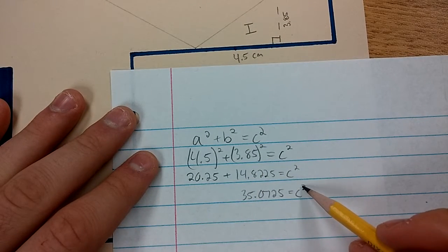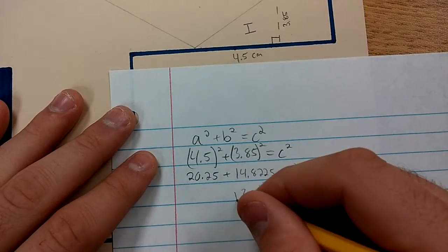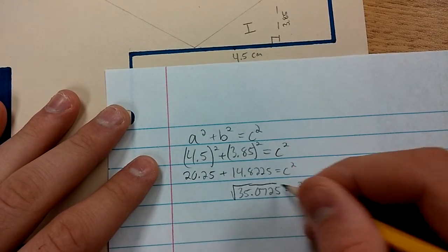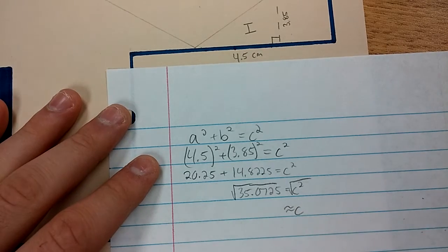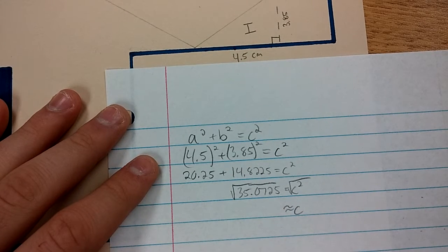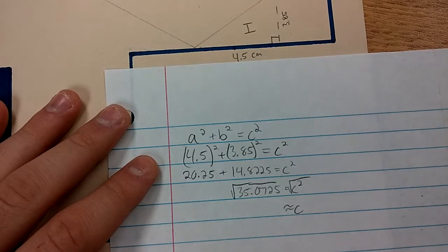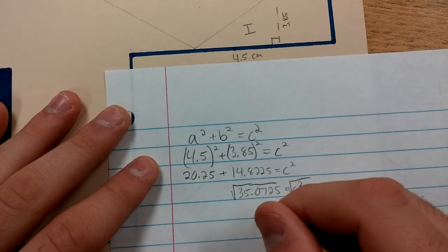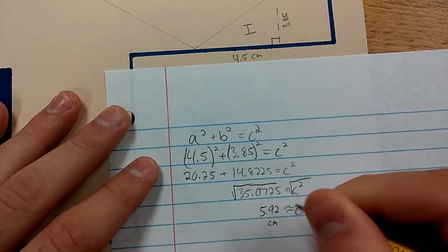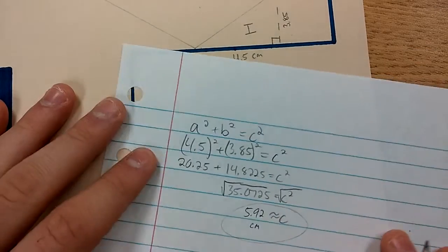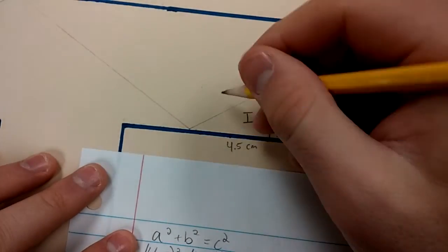In order to find just c, the inverse of squaring something is the square root. So we're going to square root both sides. c is going to be approximately 5.92 centimeters. We're going to go ahead and write that here.